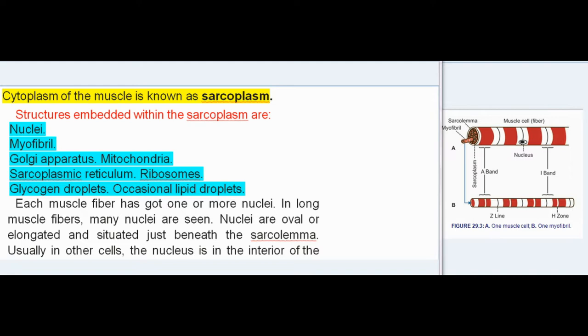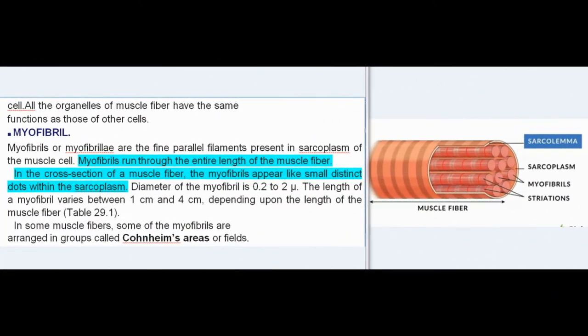Each muscle fiber has got one or more nuclei. In long muscle fibers, many nuclei are seen. Nuclei are oval or elongated and situated just beneath the sarcolemma. Usually in other cells, the nucleus is in the interior of the cell. All the organelles of muscle fiber have the same functions as those of other cells.